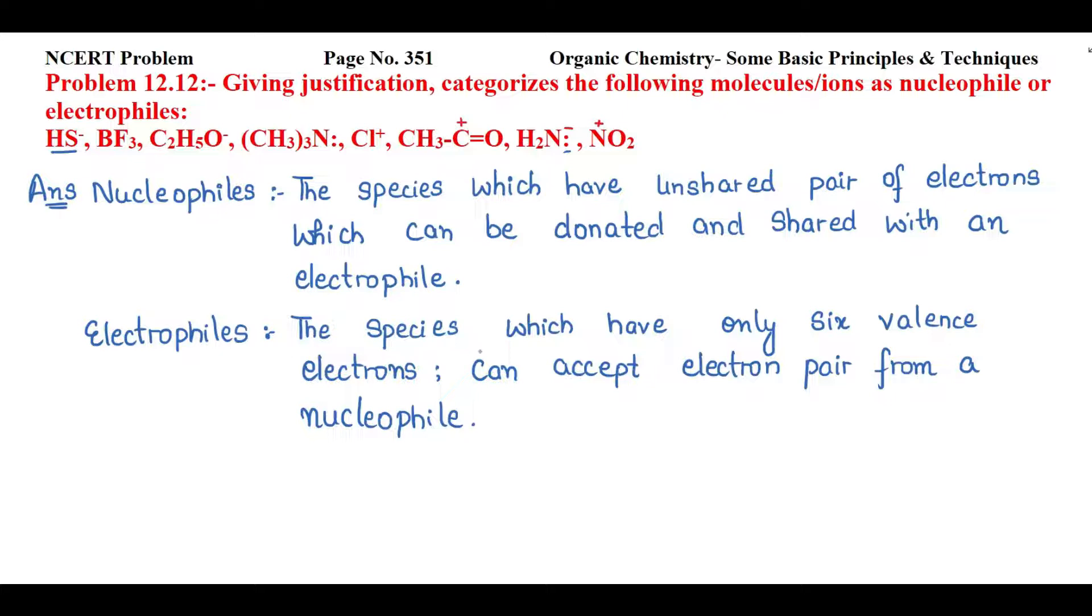Electrophiles are those species that have 6 valence electrons. You can say that the electron deficient species will come, just like BF3.